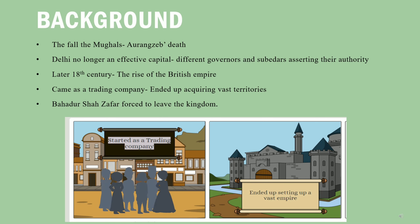We start by looking at the political conditions in India at that time. Aurangzeb was the last powerful Mughal ruler, and with his death the fall of the Mughal empire began. Different governors and subedars began asserting their authority and establishing regional kingdoms all over the country, and thus Delhi was no longer an effective center.